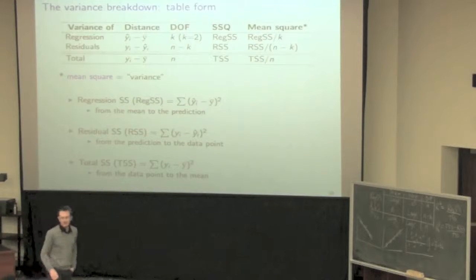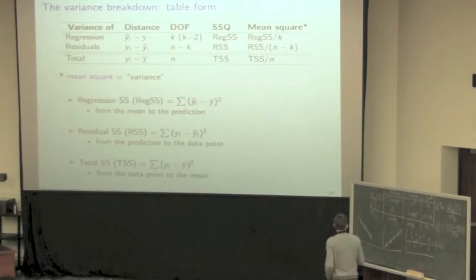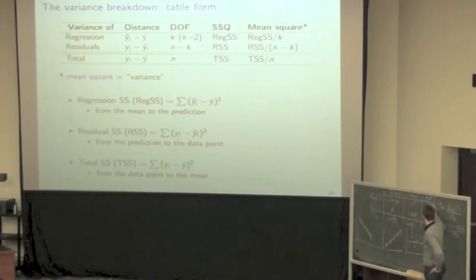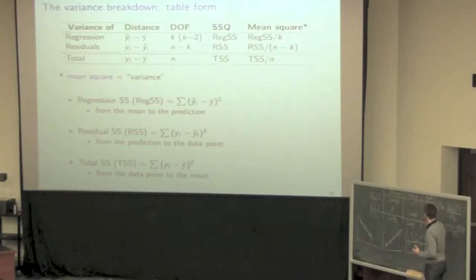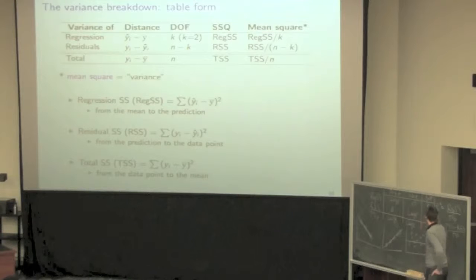K is the number of parameters. So one slope plus one intercept gives k=2. The degrees of freedom associated with the residuals is n minus k. With one data point you can fit B-naught only — using one degree of freedom. Two data points: B-naught and a slope. Three data points: intercept and slope, with one residual degree of freedom. Three data points, two parameters: one degree of freedom remaining for residuals.